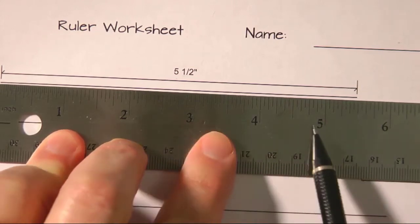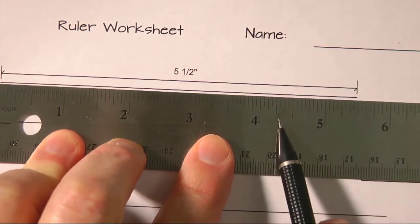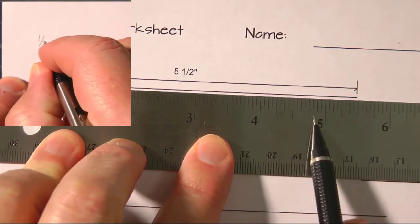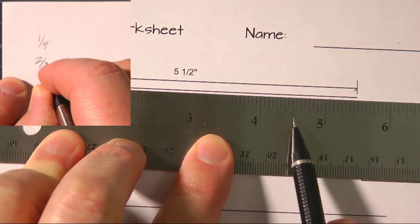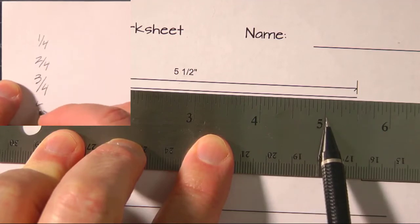We also have quarter lines. There are four quarters to an inch, so we have one quarter, two quarters, three quarters, and four quarters.